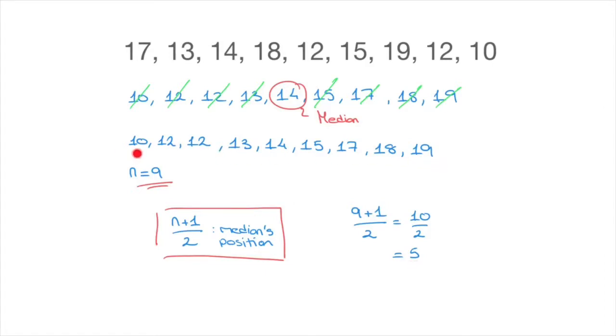So starting from the first value we have here, which is ten, we move up to the fifth value. So we have the second, third, the fourth, and the fifth value. And indeed, fourteen is the median value of this list of data.